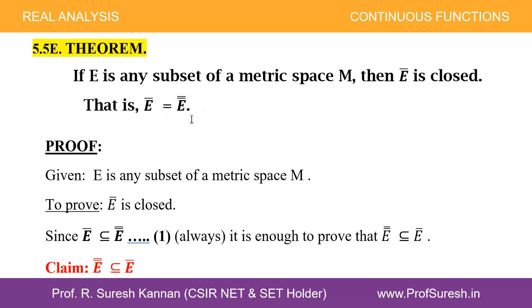That is, Ē equals E̅̅ (E double bar). Here Ē denotes the closure of E, and E̅̅ denotes the closure of Ē. The metric space M has subset E, and we have that subset.